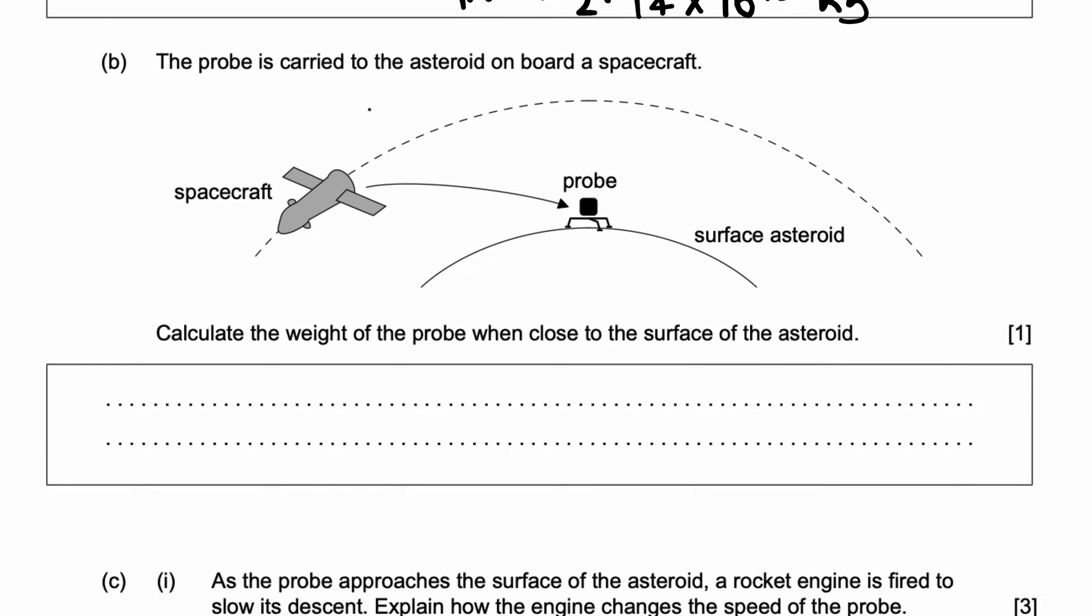Part B: The space probe is carried to the asteroid on board a spacecraft, and that's a diagram right here. Calculate the weight of the probe when close to the surface of the asteroid. We know the formula for weight equals mg. We've used this formula many times. We know the mass of the probe. So, weight equals 95 times g. What is g in this case? On earth, we use 9.81 meter per second square.